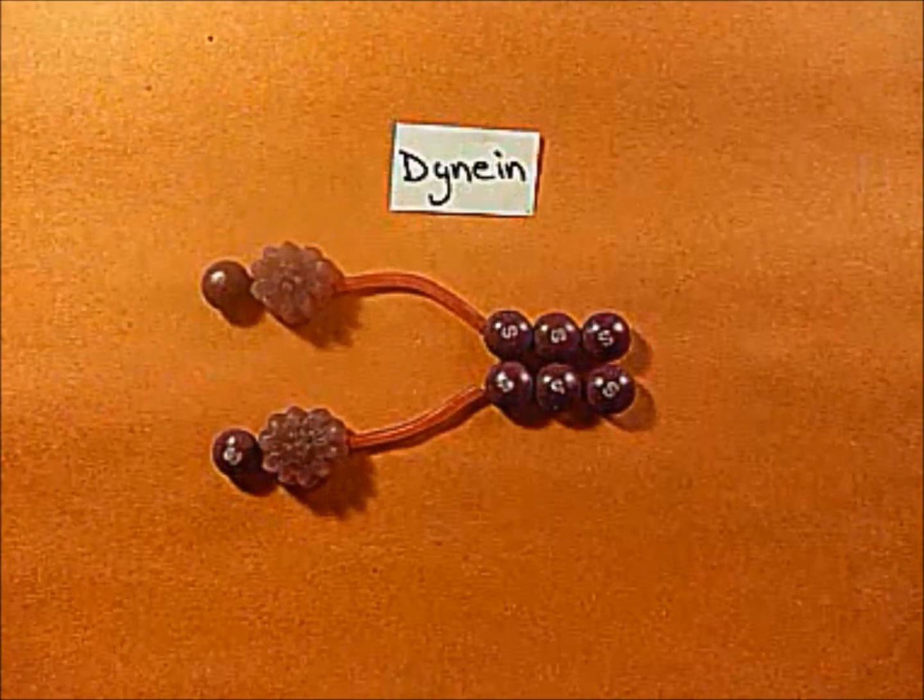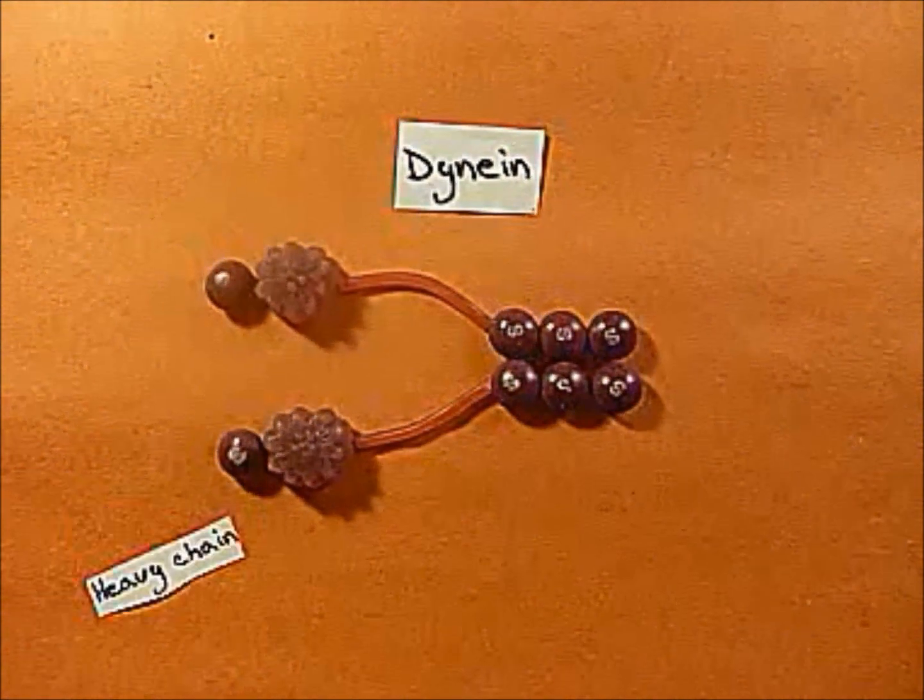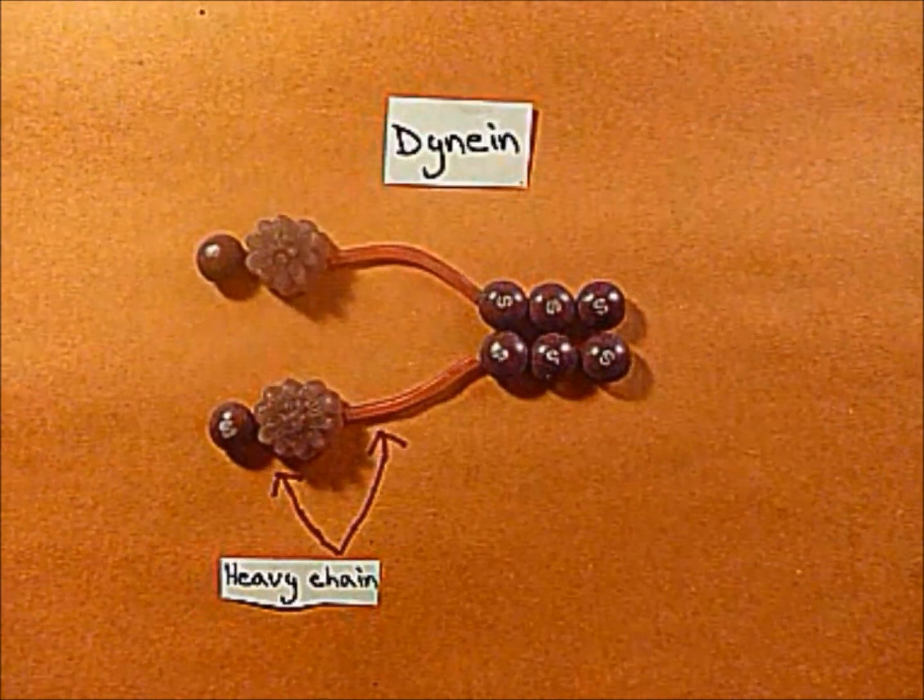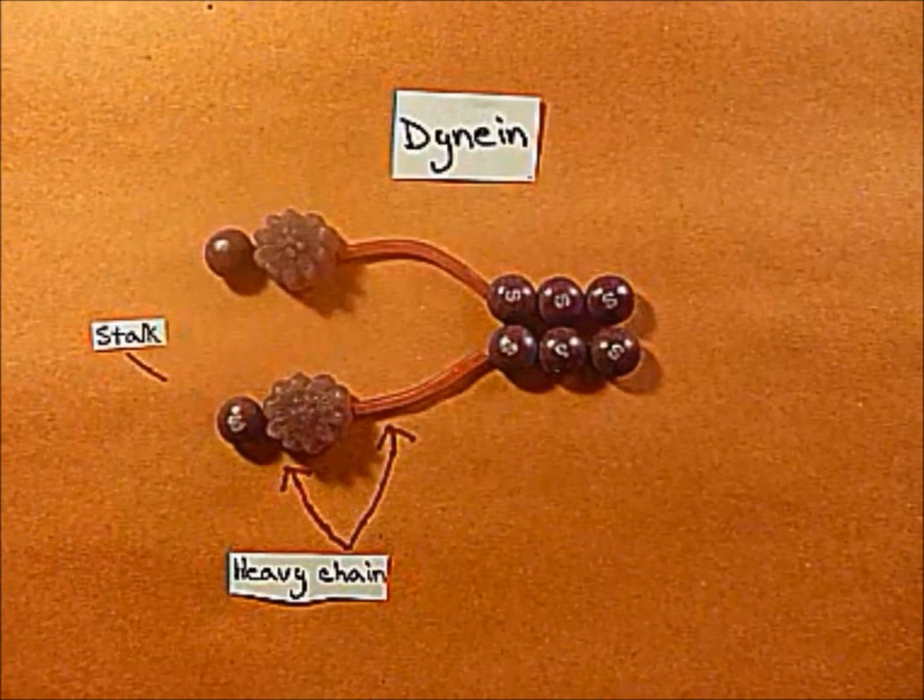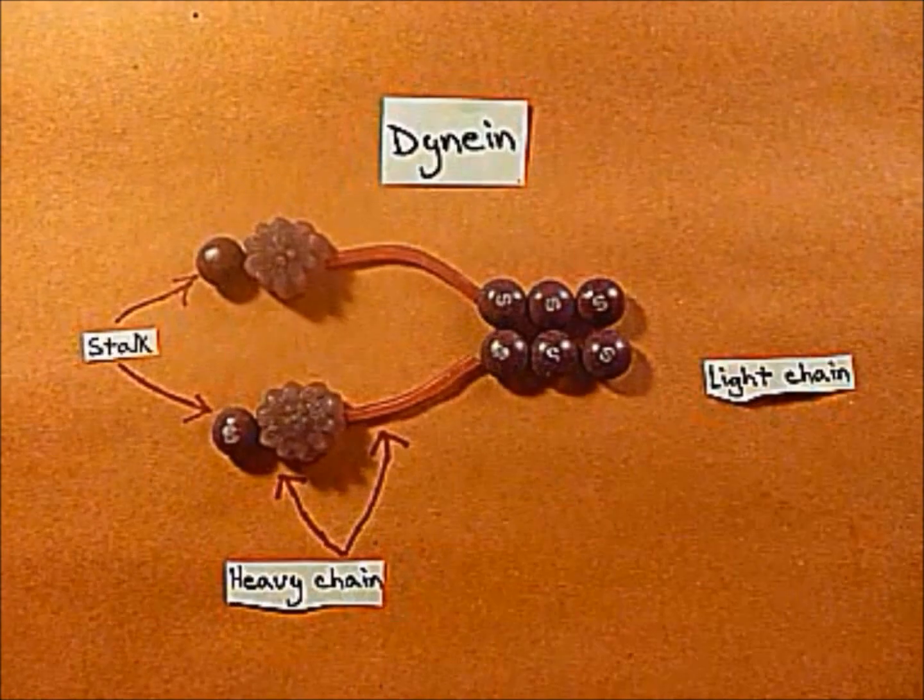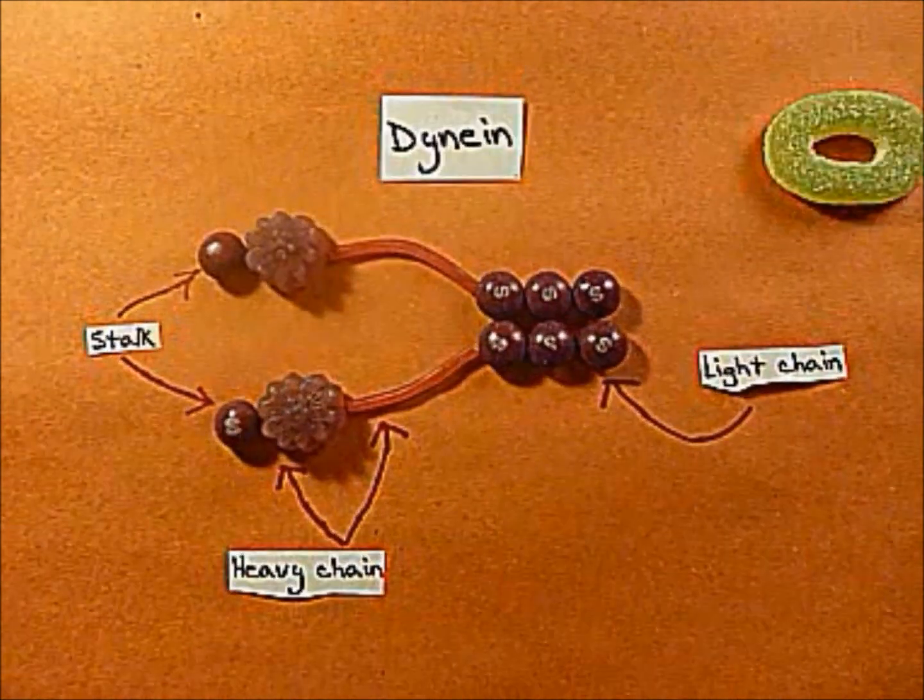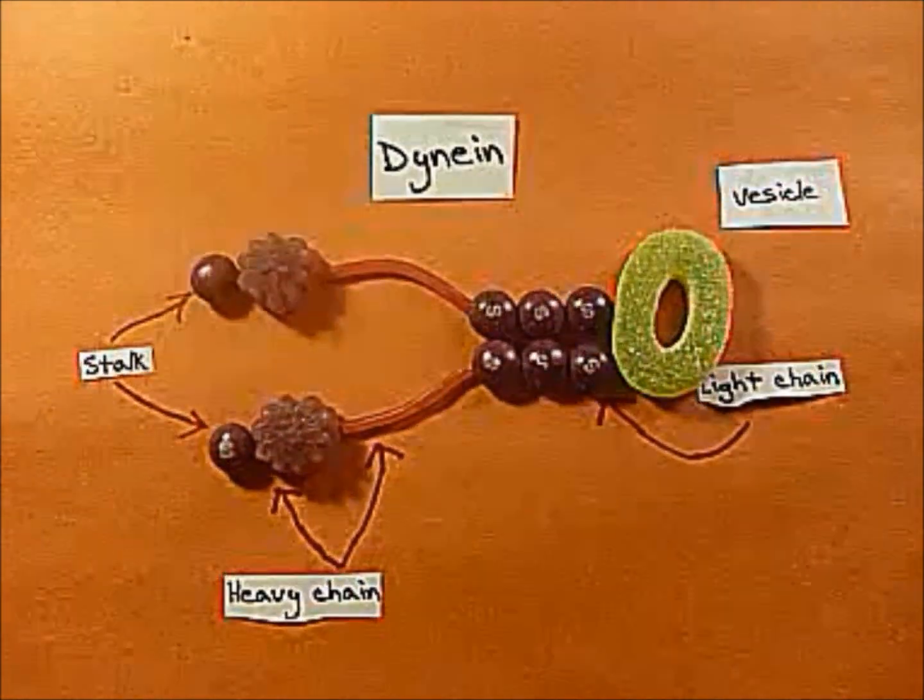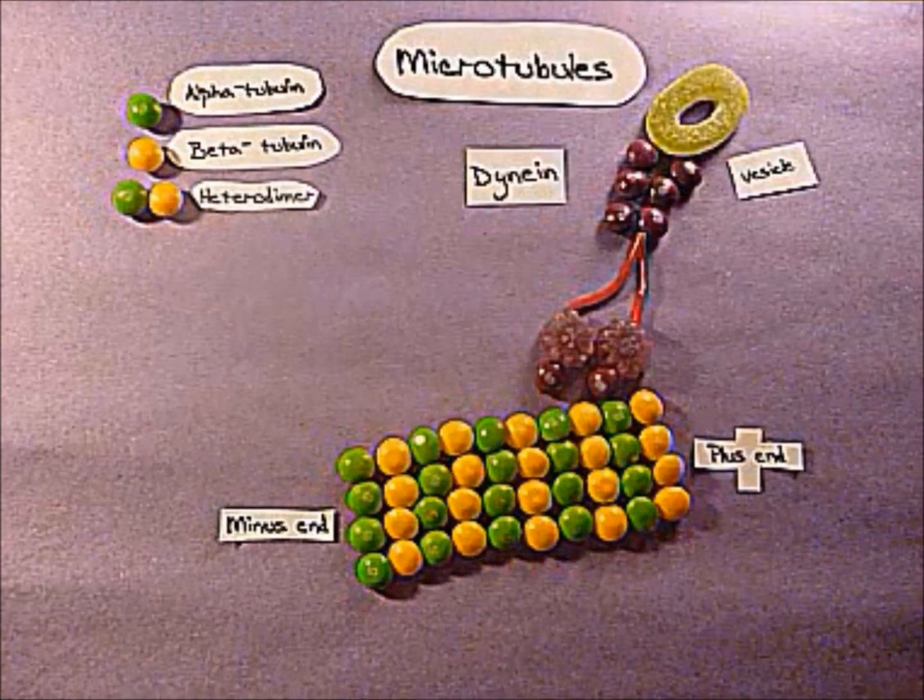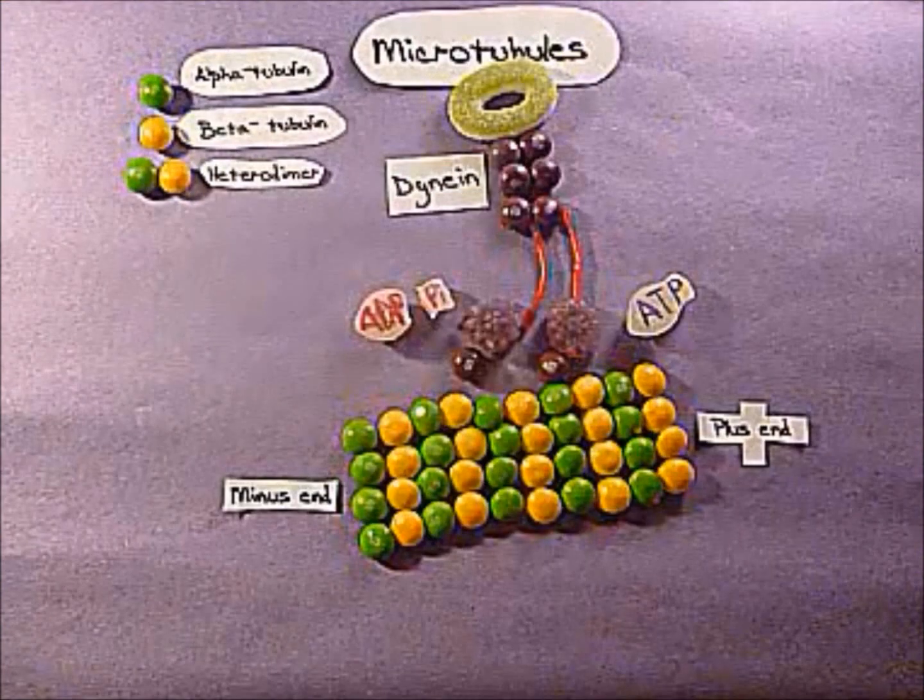Dyneins are motor proteins with two or three heavy chains with globular heads for motility and many light chains. Dynein moves its cargo towards the negative end of microtubules, usually towards the center of the cell.